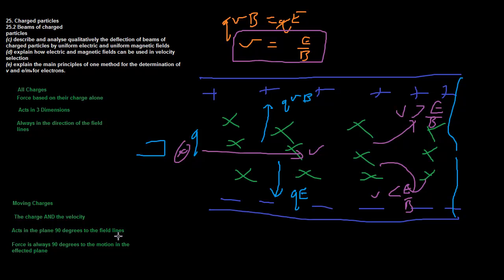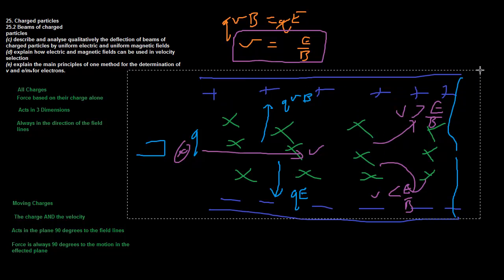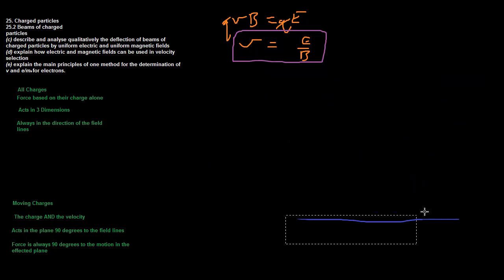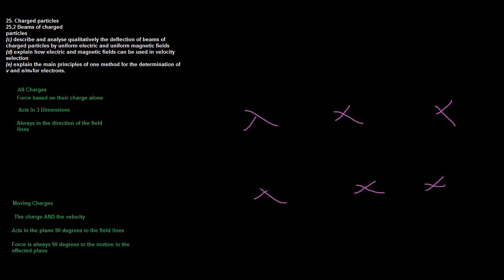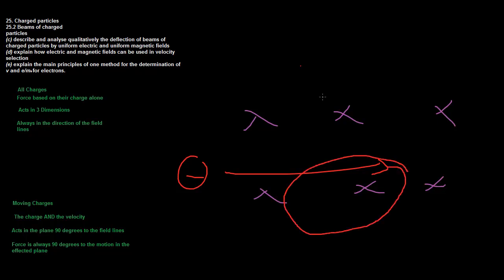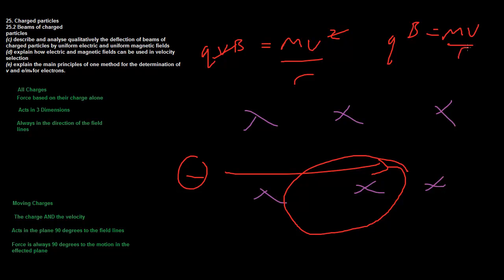The last topic is how to determine the charge-to-mass ratio or the velocity of an electron. You fire an electron into a magnetic field; it experiences a rotational force and moves in a circle. Equate the magnetic force qvB to the centripetal force mv²/r. Cancel one v from each side to get qB equals mv over r.